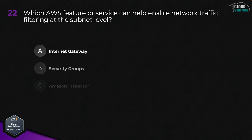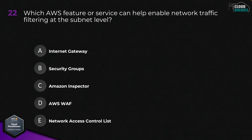Question twenty-two: the answer options presented are: A, Internet Gateway; B, Security Groups; C, Amazon Inspector; D, AWS WAF; or E, Network Access Control List. The correct answer is E, Network Access Control List, or NACLs.